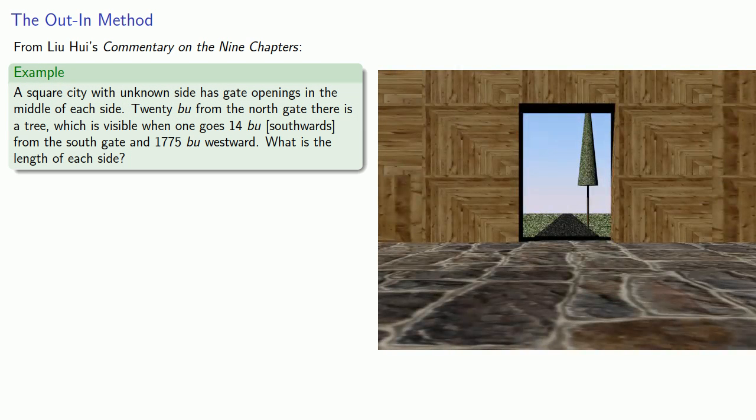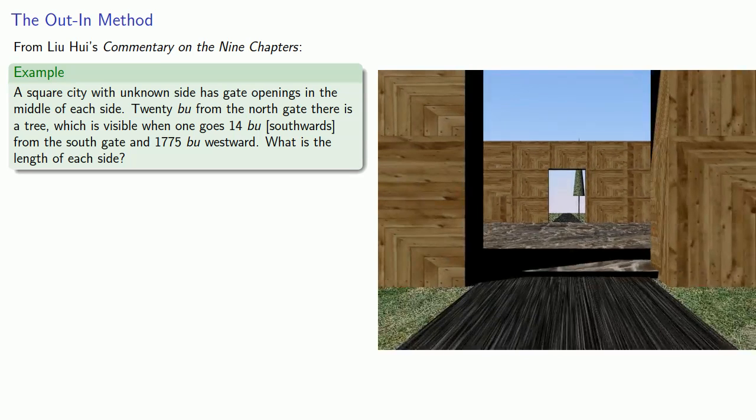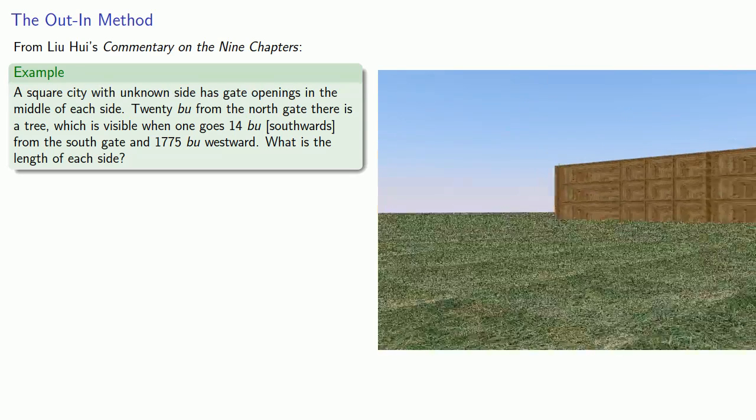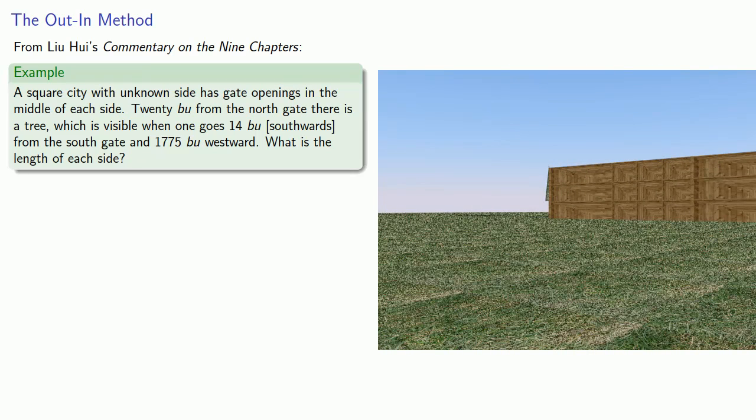So from Liu Hui's commentary on the Nine Chapters, we have the following problem. A square city with unknown side has gate openings in the middle of each side. Twenty bu from the north gate, there's a tree which is visible when one goes fourteen bu southward from the south gate and one thousand seven hundred seventy-five bu westward. What is the length of each side?